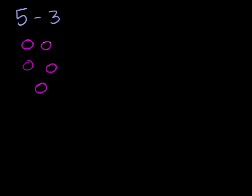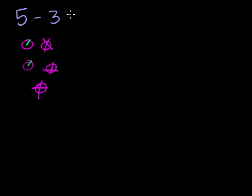I'm going to take away 3 of these berries. So if I take away that berry, that berry, and that berry — I took away 1, 2, 3 berries — how many berries do I have left? Well, the only berries I have left are right here: 1, 2. So I have 2 berries left, just like that.